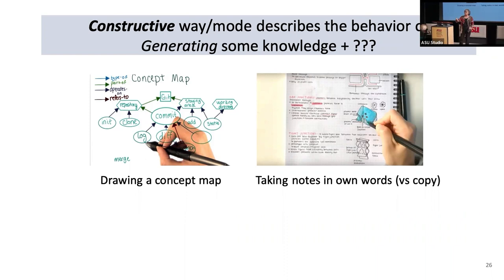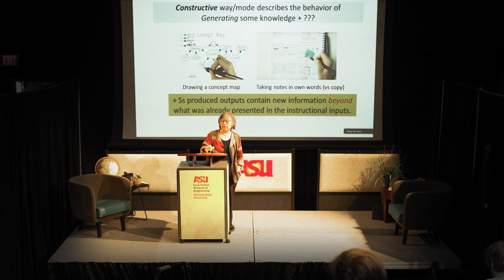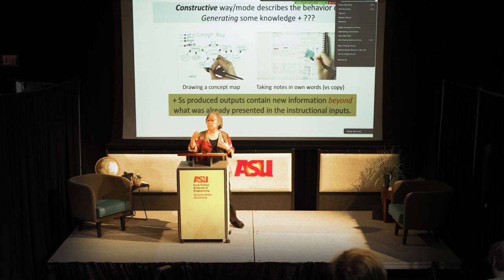The third level is Constructive, which describes the behavior of generating new knowledge — drawing a concept map, drawing a diagram, or taking notes in your own words. The key difference from Active is that the material you produce is not information that was already given; it goes beyond what was already given. It could be a small thing or something as large as a concept map.